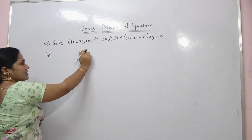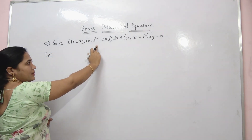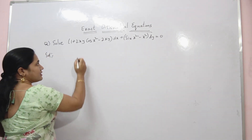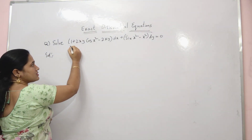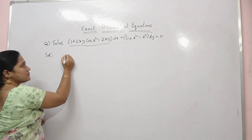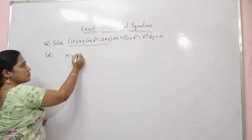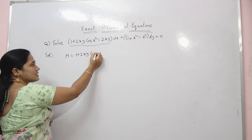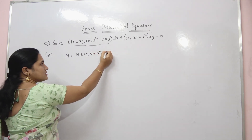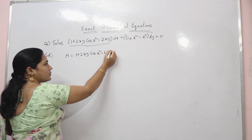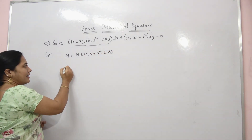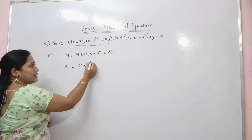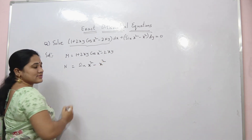The given equation is in the form M dx plus N dy. So M equals 1 + 2xy cos(x²) − 2xy, and N equals sin(x²) − x².